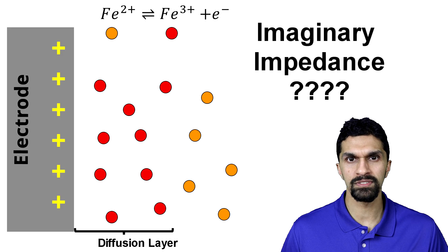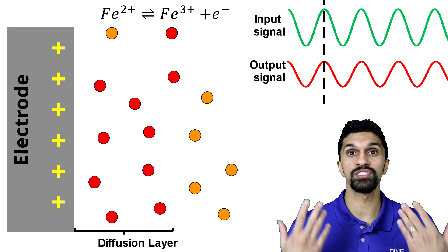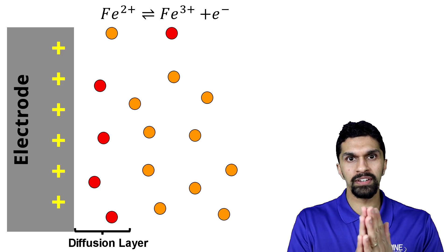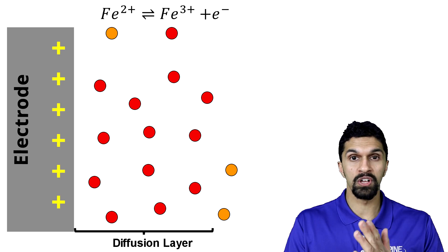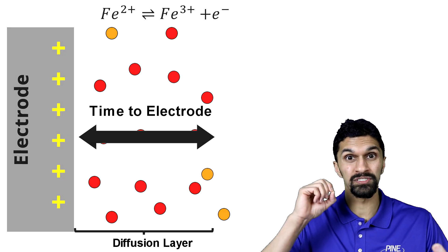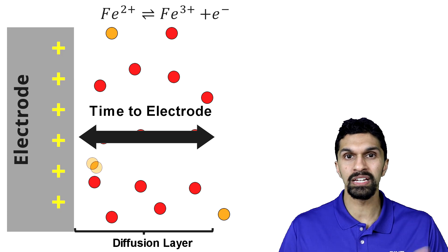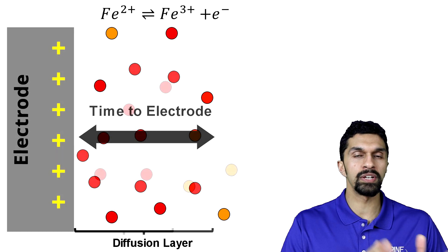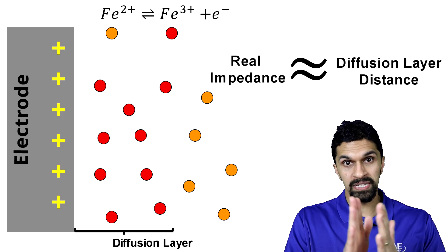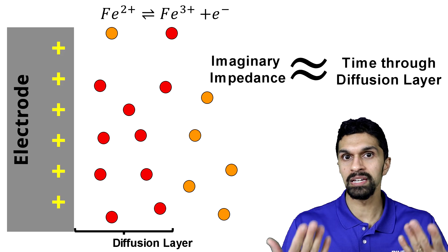But what about the imaginary impedance? We only get imaginary impedance when we see a phase shift or a phase angle, and that happens when we get a time delay. As we have a bigger and bigger diffusion layer thickness, not only is it a longer distance to pass charge through, but there's also a time element. It takes longer for an iron 2+ molecule to diffuse through a larger diffusion layer to get to the electrode surface to undergo a redox reaction. So we can think of the real impedance as the physical distance of the diffusion layer, and the imaginary impedance as the time it takes for the molecule to traverse that growing layer.